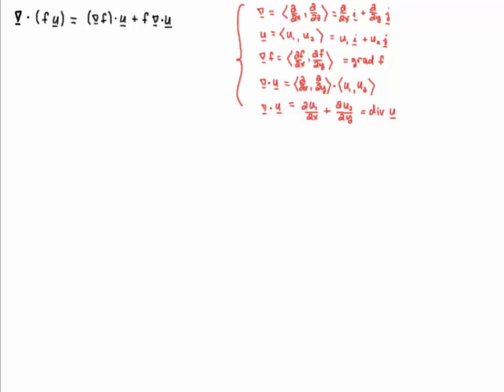Hello students, in this video we're going to verify the following vector calculus identity. Here we have the divergence, which is grad dot, a scalar function f times a vector field u.